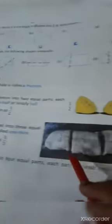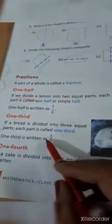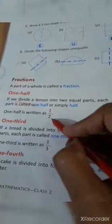One third, when we divide a thing into three equal parts, one part is called one third. One third. Each part is called one third and we write one third like this. One half, we will write like this.